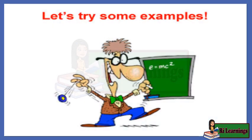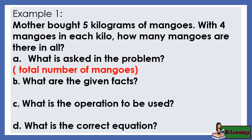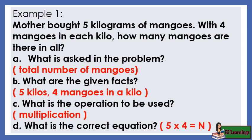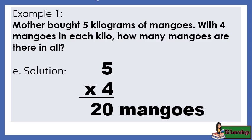Example 1: Mother bought five kilograms of mangoes with four mangoes in each kilo. How many mangoes are there in all? A) What is asked: total number of mangoes. B) Given facts: five kilos, four mangoes in a kilo. C) Operation: multiplication. D) Equation: 5 × 4 = n. E) Solution: 5 × 4 = 20 mangoes.